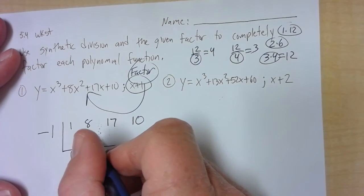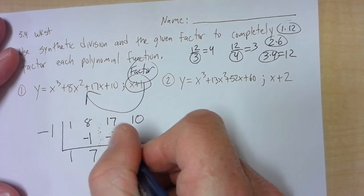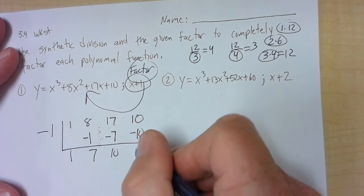Drop. Multiply. Add. Multiply. Add. Multiply. And we get a remainder of 0.